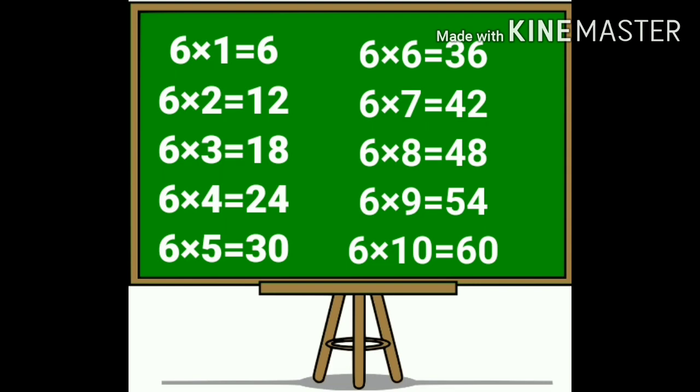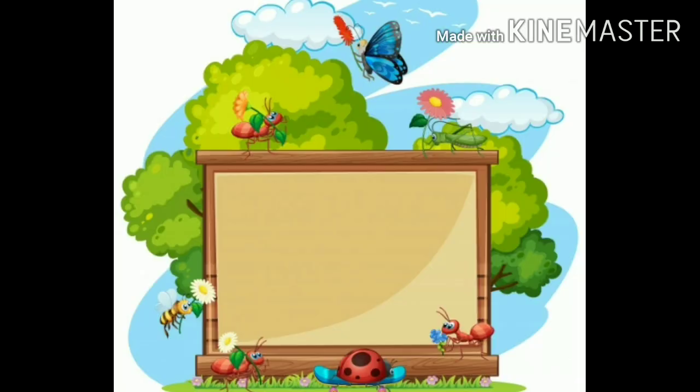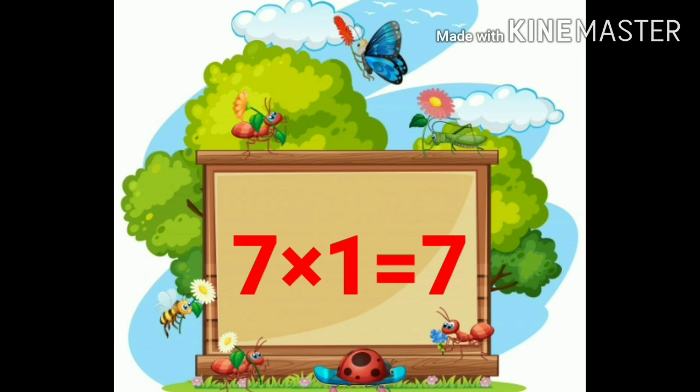Again: six ones are 6. Six twos are 12. Six threes are 18. Six fours are 24. Six fives are 30. Six sixes are 36. Six sevens are 42. Six eights are 48. Six nines are 54. Six tens are 60.